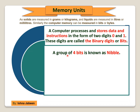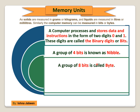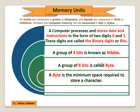A bit is the smallest unit of information that a computer can process and store. A group of 4 bits is known as a nibble, and a group of 8 bits is called a byte. A byte is the minimum space required to store a character.